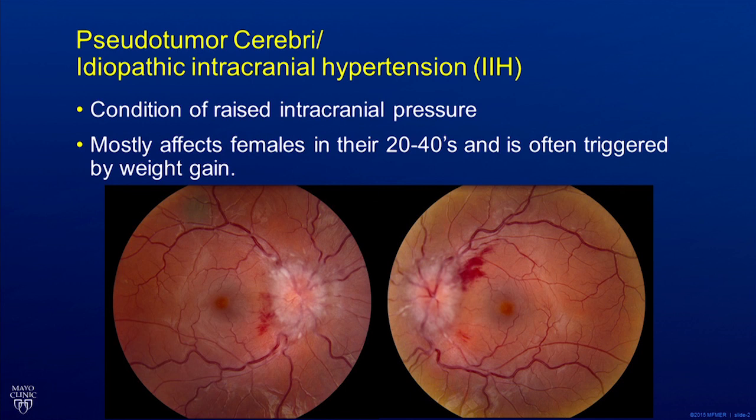Interestingly, 90% of patients affected with this condition are young adult females, and 90% are overweight. Despite this specific demographic being affected, the cause for this condition is still unknown, which is why the disease is also called idiopathic intracranial hypertension, IIH for short.